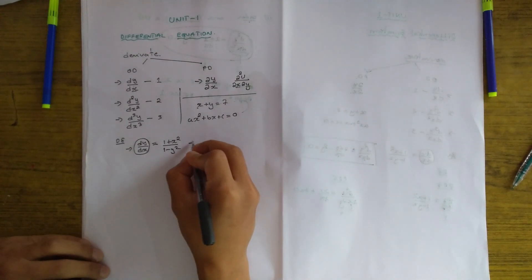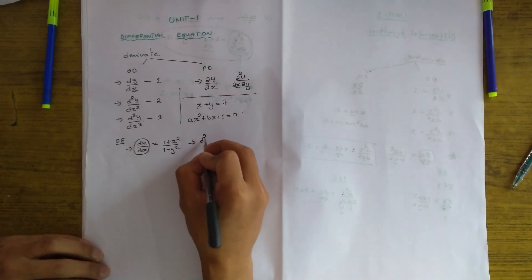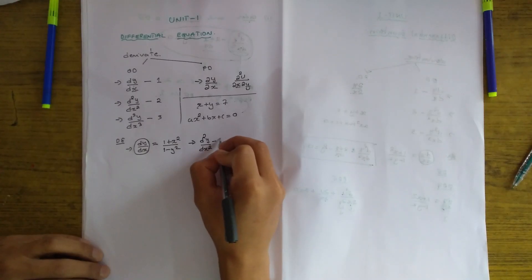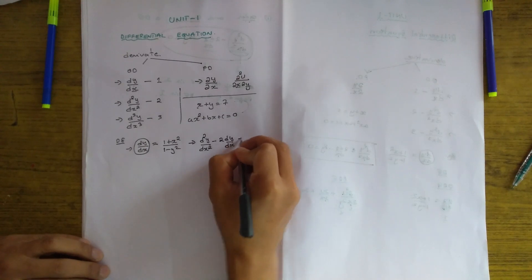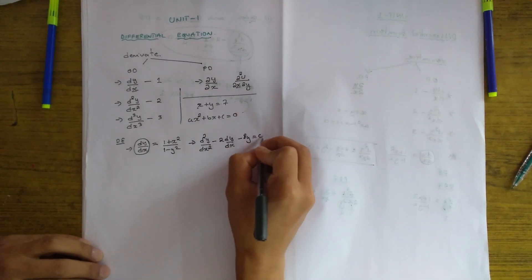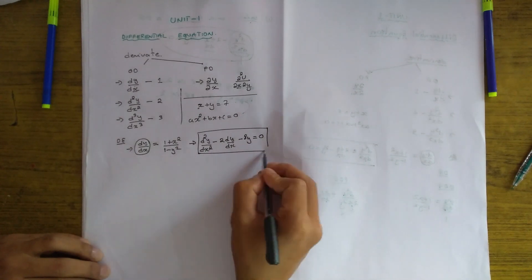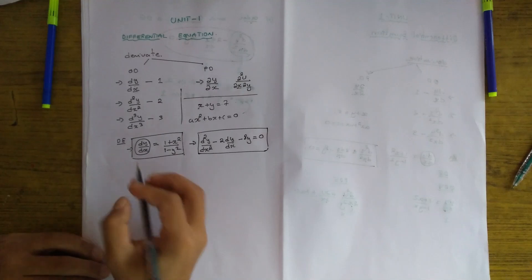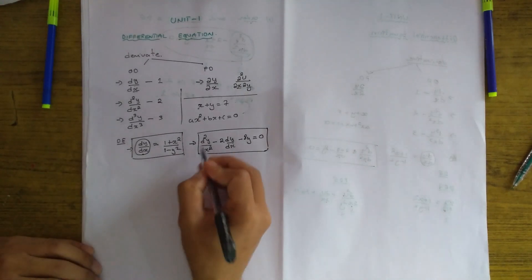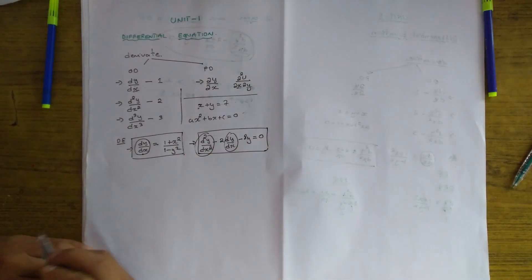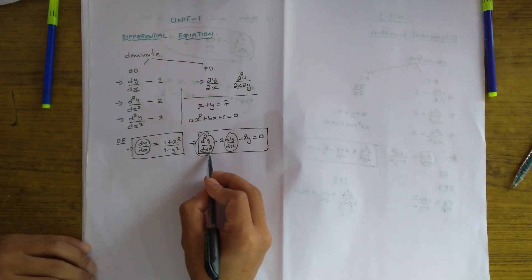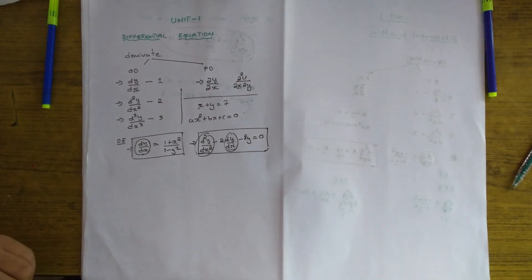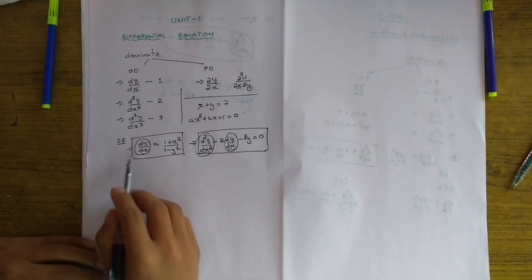Another example of a differential equation is d²y/dx² minus 8y = 0, where d²y/dx² is a second-order derivative. So in a differential equation we can have one derivative or more than one derivative. In this case we have two derivatives: the second-order derivative and the first-order derivative.